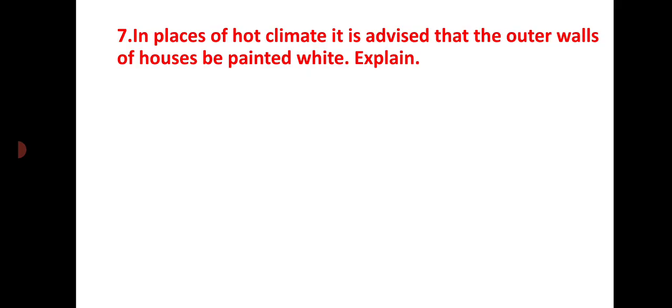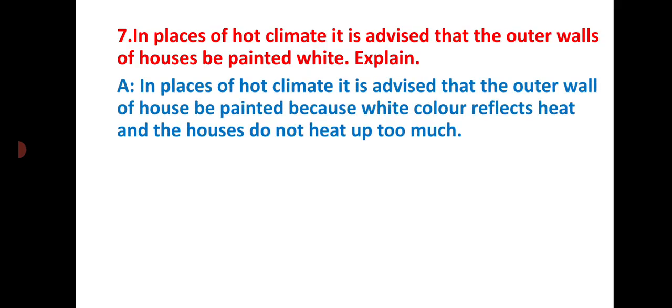Question number seven: in places of hot climate it is advised that the outer walls of houses be painted white. Explain. Answer: white color reflects heat and the houses do not heat up too much.